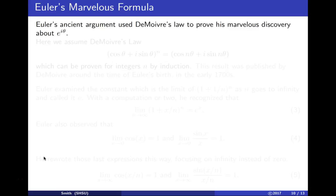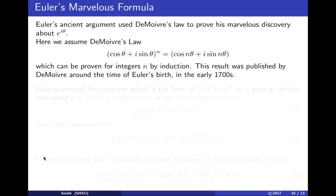Euler took DeMoivre's formula and explored it further using limits. We'll assume DeMoivre's formula, which was proven and published in the early 1700s. Euler had been investigating the constant that occurs when you take (1 + 1/n)^n as n → ∞.